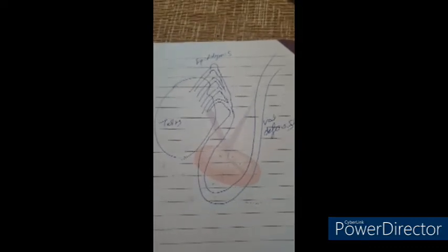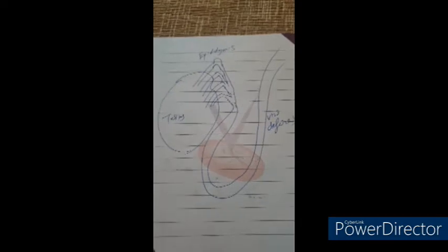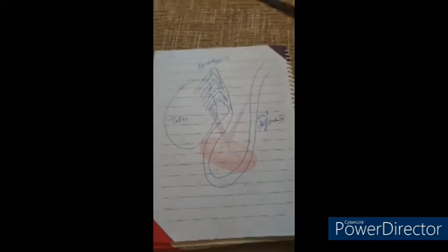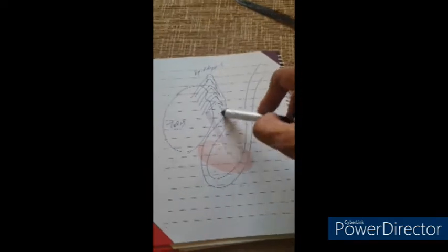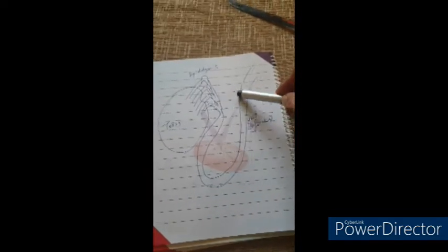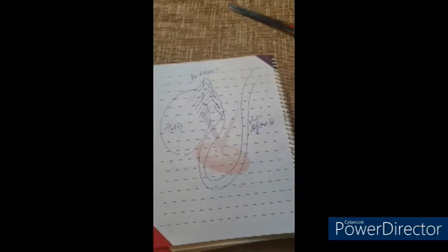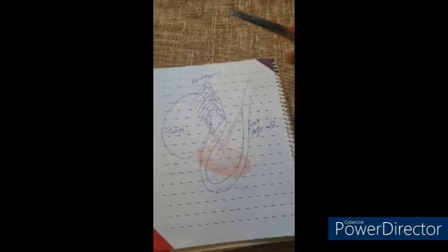I discussed non-obstructive azospermia in the previous video. Now we are going to discuss obstructive azospermia. This is the testes where sperm is produced, this is the epididymis tubule, and then the vas deferens is the tube which carries it to the urethra. There can be obstruction at various levels.